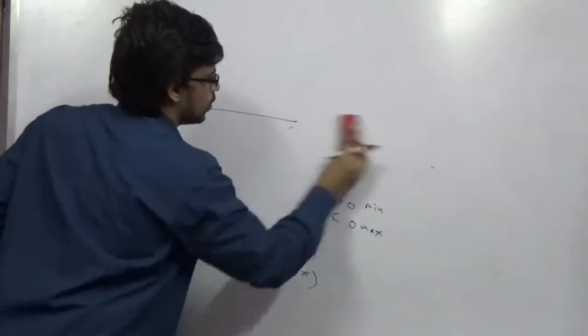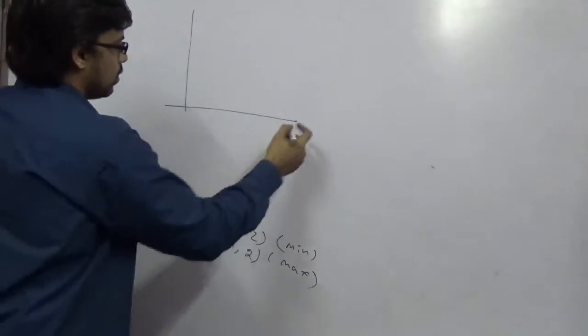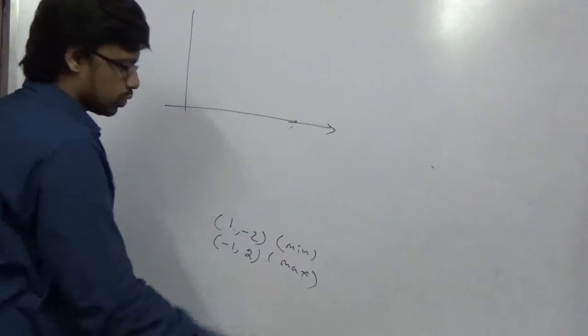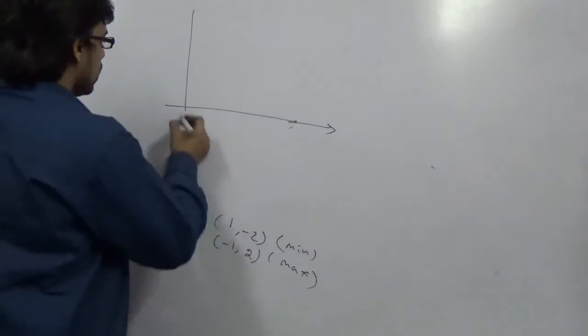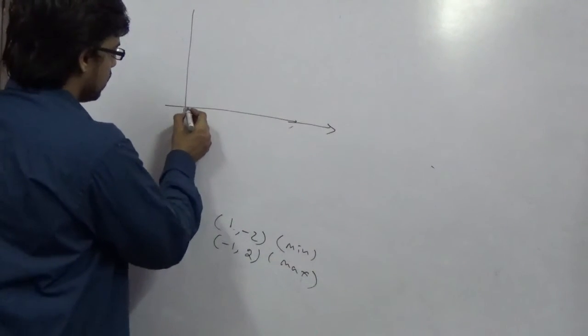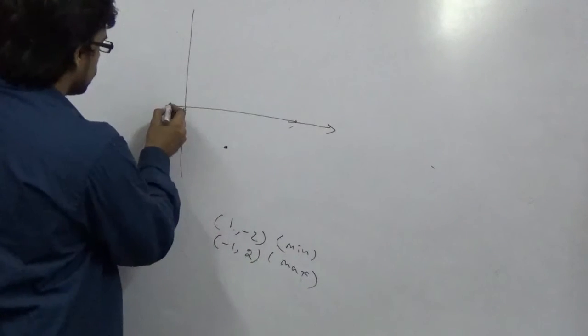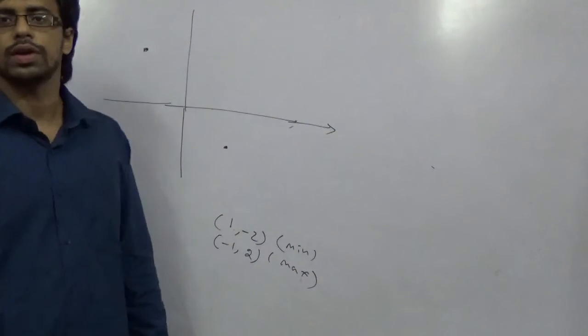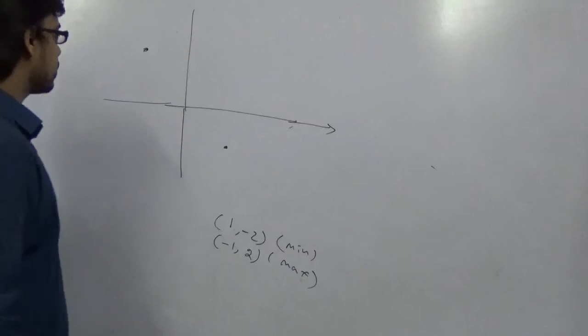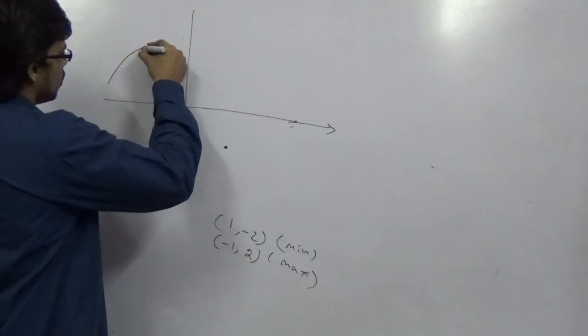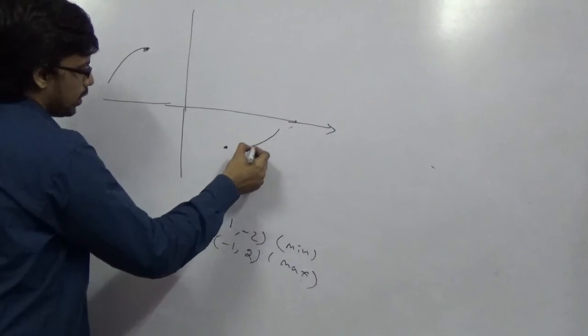Remember these two points were very important. Now if I am going to draw the curve, so I need two points. 1 comma minus 2 will be here somewhere. And minus 1 comma 2 will be somewhere here. Now our job is to draw the curve. So obviously this is the maximum point. So my curve will be like this. And this is my minimum point.